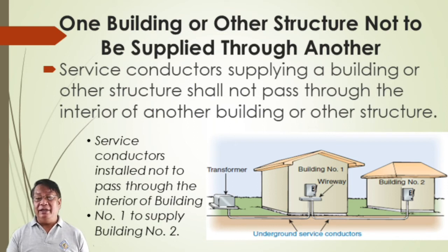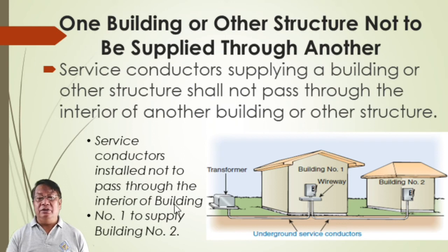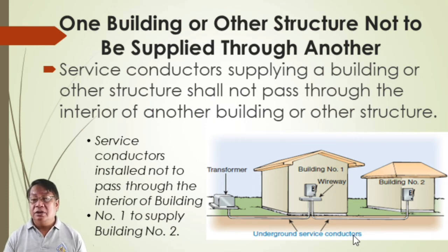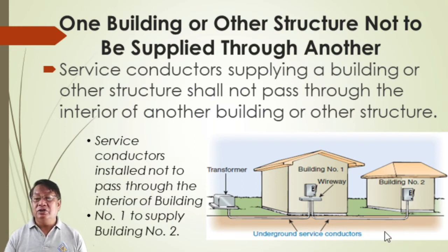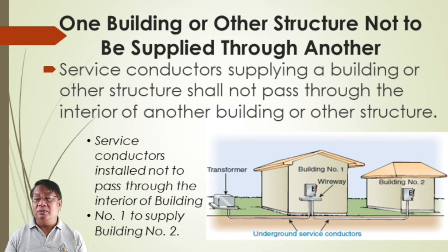This is very clear: service conductors shall not pass through one building to supply another. Building two should have a separate supply from the transformer rather than having supply run through building one. Service conductors installed as open conductors or multi-conductor cable with an overall outer jacket shall have a clearance of not less than 900 millimeters or 3 feet from a window.